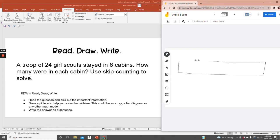We know that there are 24 Girl Scouts and there are six cabins. So we're going to skip count by sixes to get to 24. Are you ready? 6, 12, 18, 24.